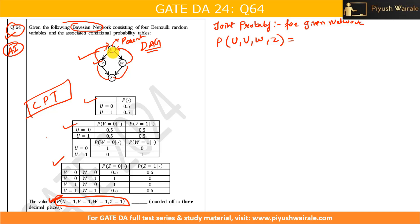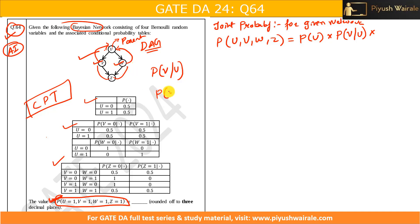Since U is an independent node with no incoming arrow, we start with P(U). V is dependent on U, so we write P(V | U). W is also dependent on U, so we write P(W | U). Z is dependent on V and W, so we write P(Z | V, W).